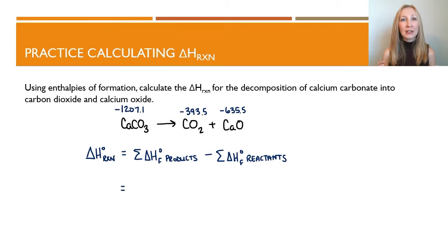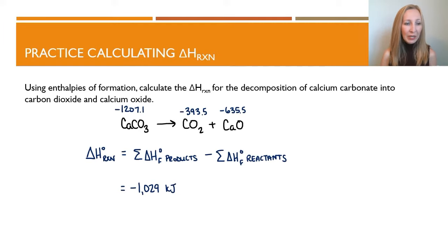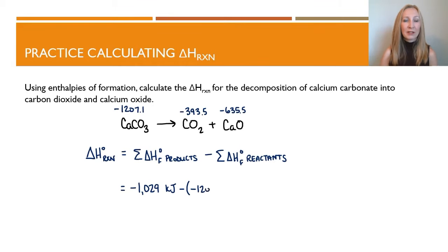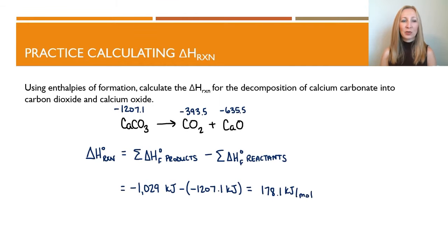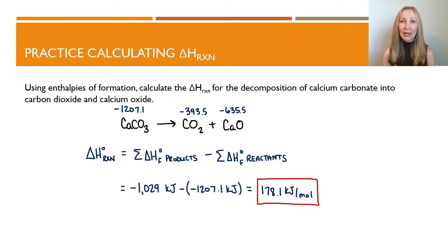The sum of the heats of formation of the products is negative 393.5 plus negative 635.5, giving negative 1029 kilojoules. Now subtracting the heat of formation of the reactants: negative 1029 minus negative 1207.1 kilojoules — subtracting a negative is adding a positive. So we have negative 1029 minus negative 1207.1, and we get a net of positive 178.1 kilojoules per mole. This is an endothermic reaction — we have to put more energy in than what we get out.